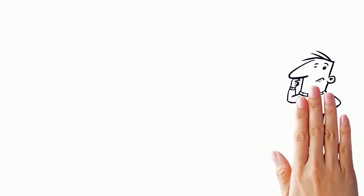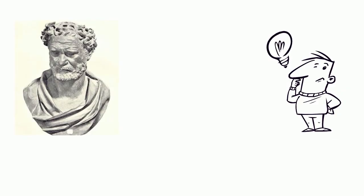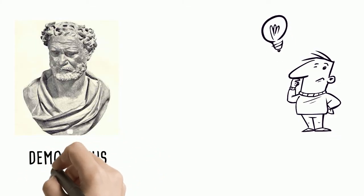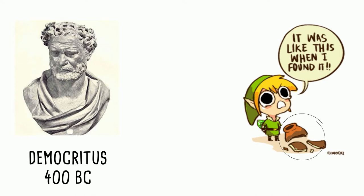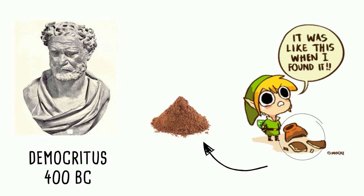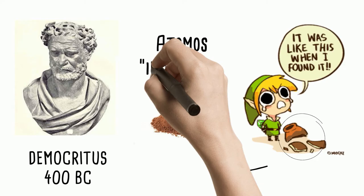Have you ever wondered how atomic models evolved? In 400 BC, Democritus stated that everything is made of very tiny particles that you cannot break down into smaller pieces anymore. He called it atomos. In Greek, atomos means indivisible.